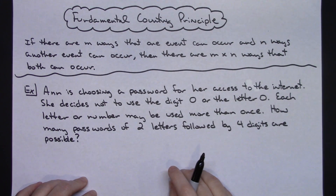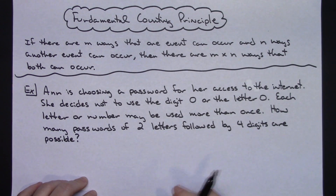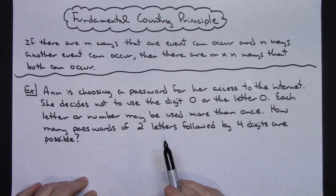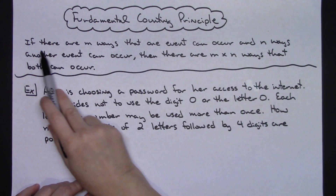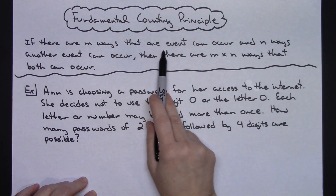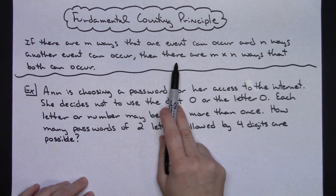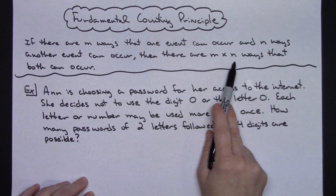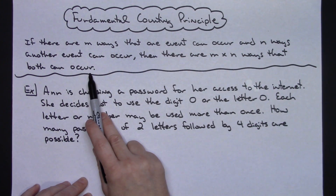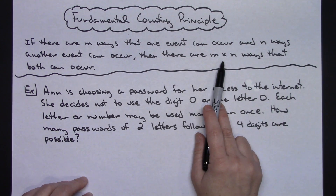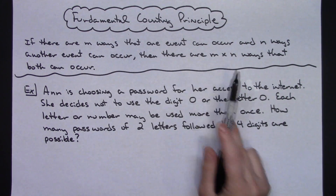Today we're going to take a look at the fundamental counting principle. We'll do a couple of examples with it and then even tie in a little bit of probability. Basically, what this fundamental counting principle states is that if there are m ways that one event can occur and n ways that another event can occur, then there are m times n ways that both of those events can occur. So we're going to be doing a lot of multiplication and taking a look at the conditions given in the problem.